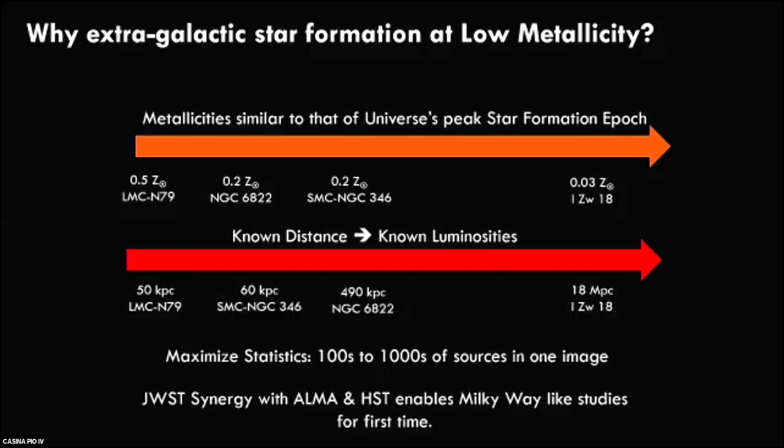Why study extragalactic star formation at low metallicity? Most of what we understand about star formation — the detailed physics — comes from nearby star formation regions like Orion, Taurus, Ophiuchus. But at the peak epoch of star formation in the universe, the metallicity was much lower, more like 20 percent solar. So the question is: are the physics different when you go to low metallicity compared to what we know from the galaxy? The study spans a range of metallicities from the Large Magellanic Cloud, which is 50 percent solar — here it's 0.5 Z, where Z represents all the metals, everything heavier than hydrogen and helium, as a fraction relative to the Sun.